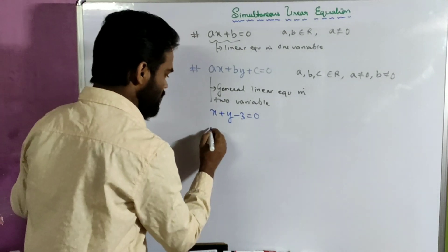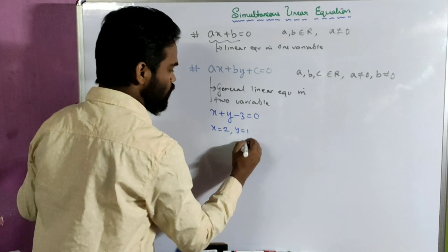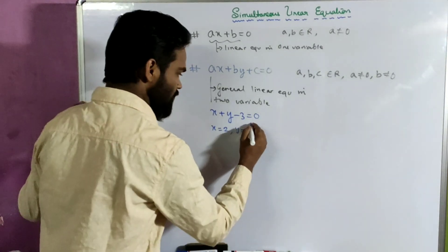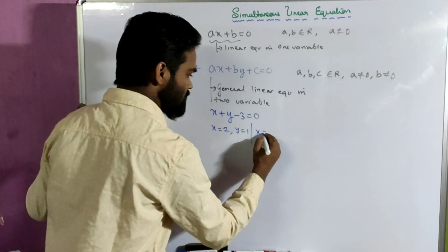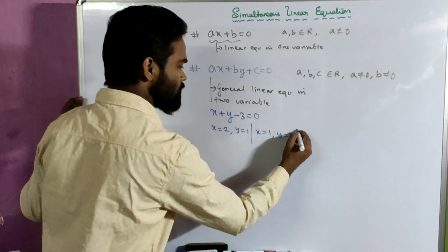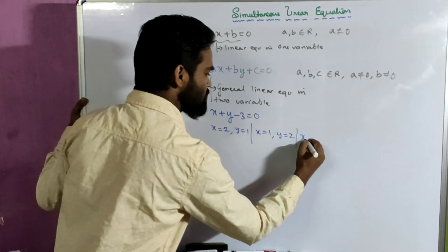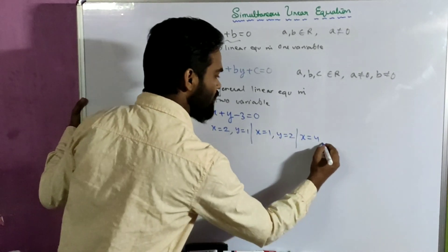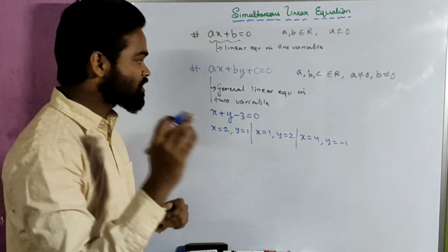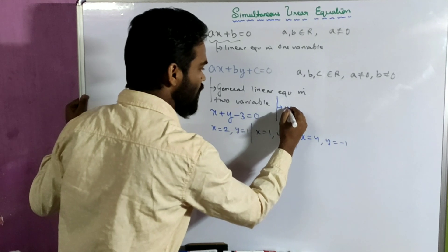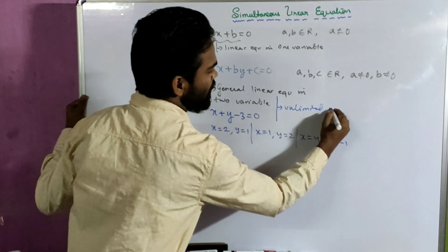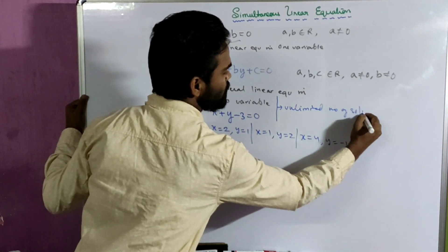If you look carefully, if I take x as 2 and y as 1, it satisfies the equation. Similarly, if I take x as 1 and y as 2, again it satisfies the equation. If I take x as 4 and y as minus 1, that also satisfies — which means it will have an unlimited number of solutions.